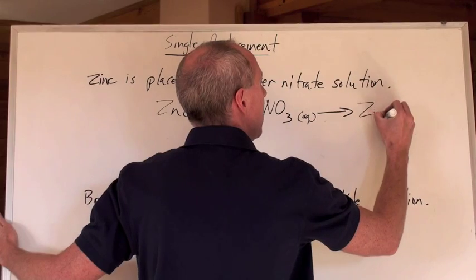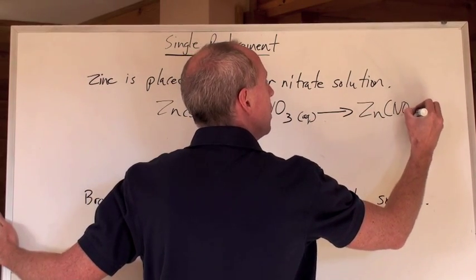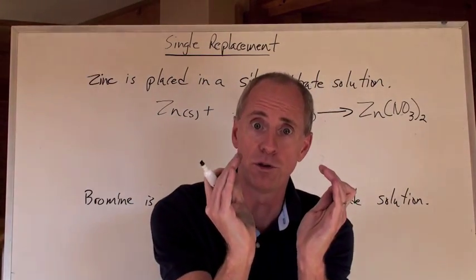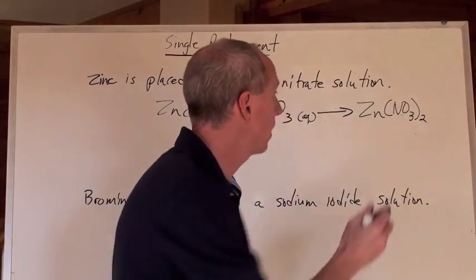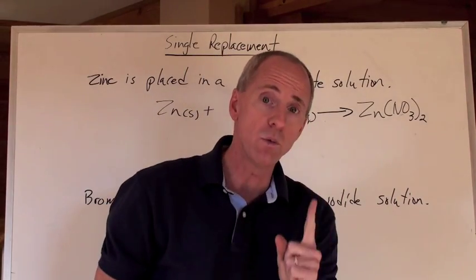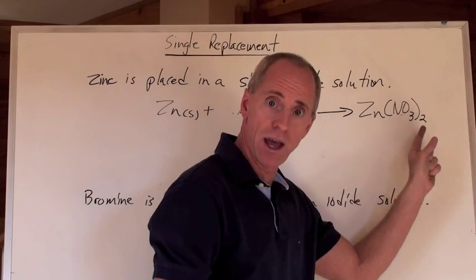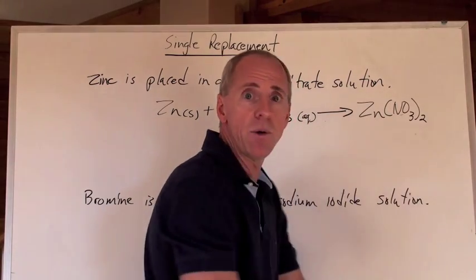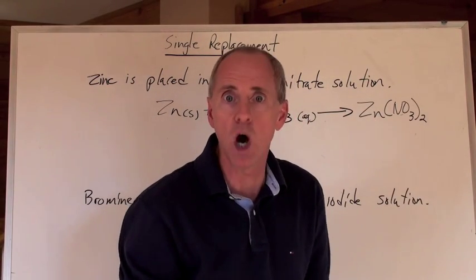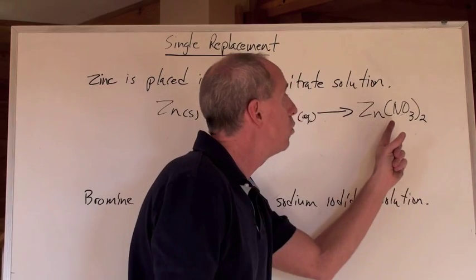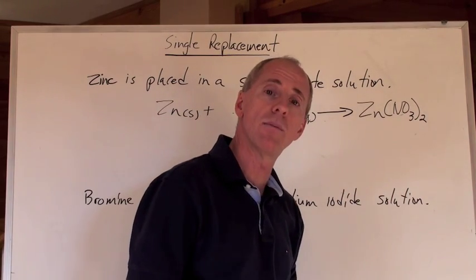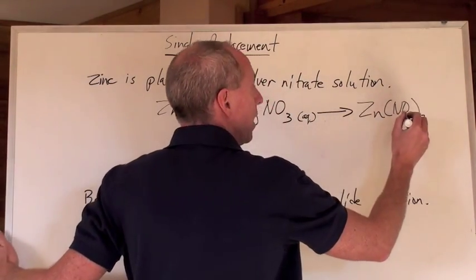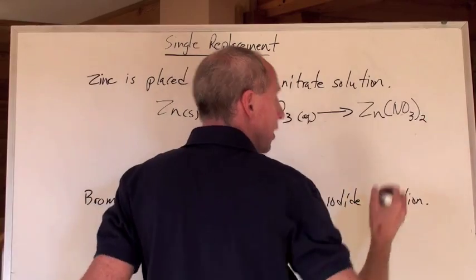That's going to make Zn(NO3)2. You need two NO3s, so whenever you have a polyatomic ion and you need more than one of them, you put brackets and put that number. And if you only need one, you do not put brackets around a polyatomic ion unless you need more than one of them.